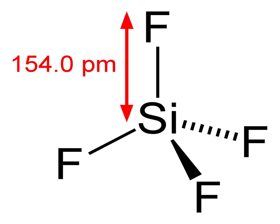In the laboratory, the compound is prepared by heating BaSiF₆ above 300 degrees Celsius, whereupon the solid releases volatile silicon fluoride, leaving a residue of barium fluoride. The required BaSiF₆ is prepared by treating aqueous hexafluorosilicic acid with barium chloride.